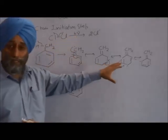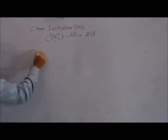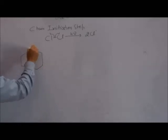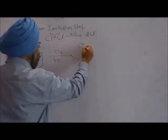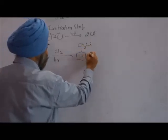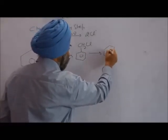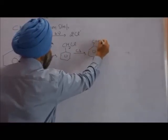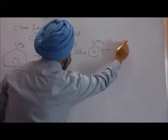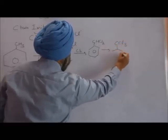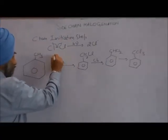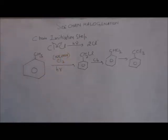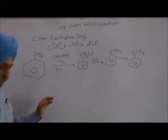So whenever we do the halogenation of toluene in the presence of sunlight, it is a side chain halogenation that occurs. Now, if chlorine is used in excess in the presence of sunlight, rather than extracting one hydrogen, chlorine can extract all the hydrogens. Subsequently, all the hydrogen atoms of the methyl group in toluene can be substituted by chlorine atoms when chlorine is used in excess.